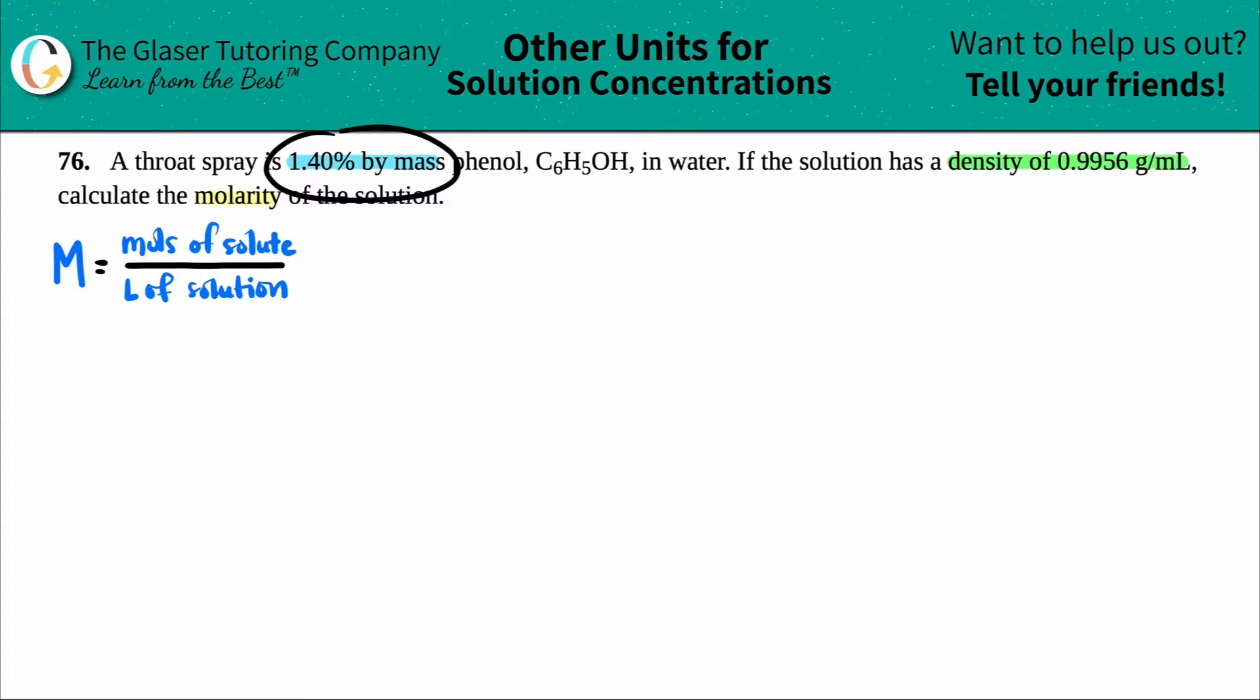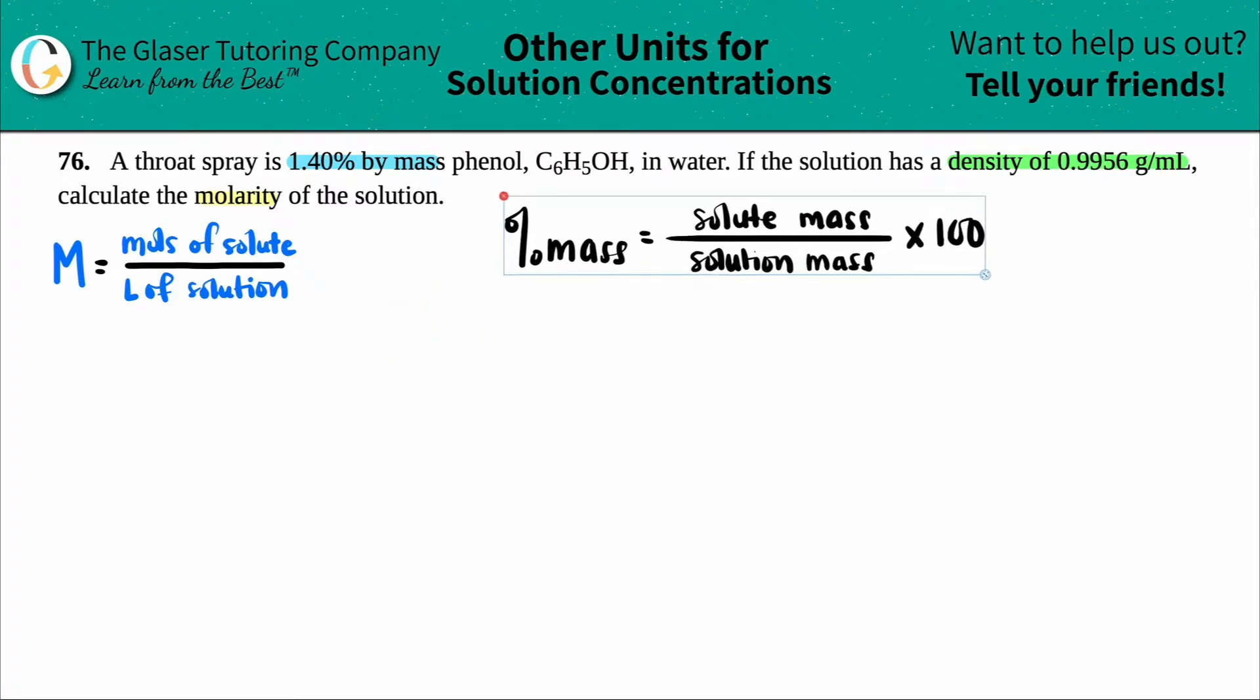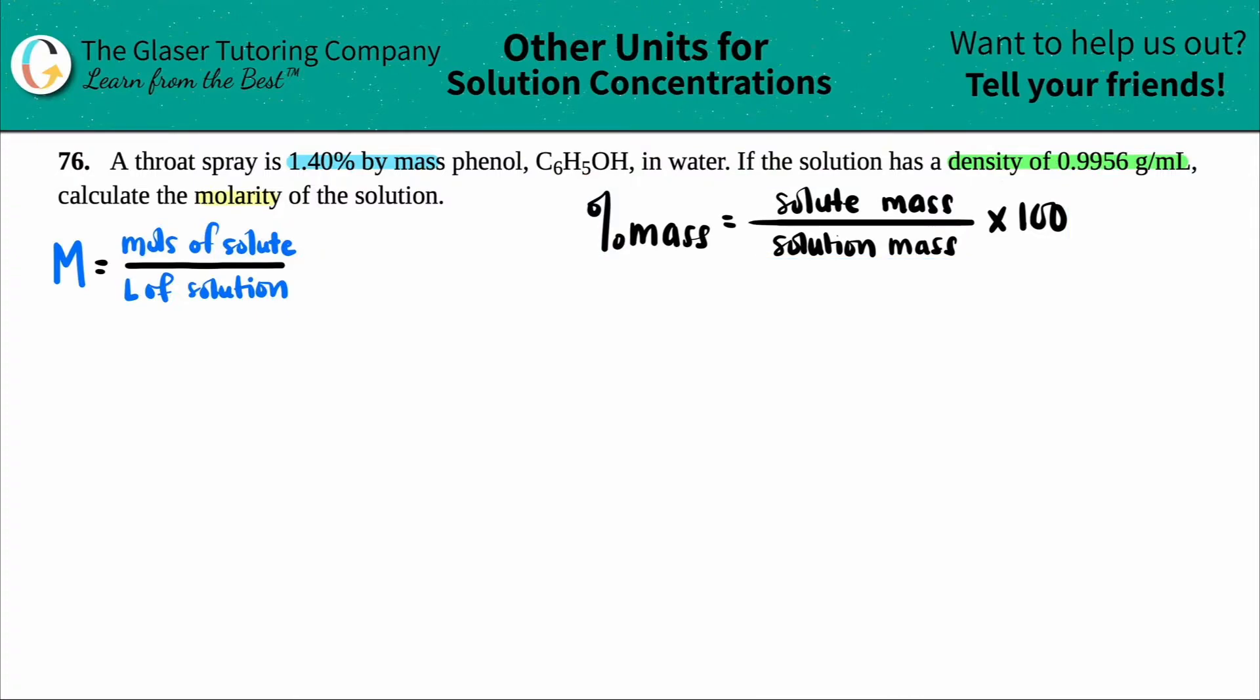They gave me a percent mass number. Is there any formula that has percent mass? Yeah, it's this one. A percent by mass is just part over whole—it's the solute mass divided by the solution mass. It's solute over solution. That's how we're going to link it together. For molarity it's moles over liters, but for percent by mass it's mass over mass. I think we can work something out here.